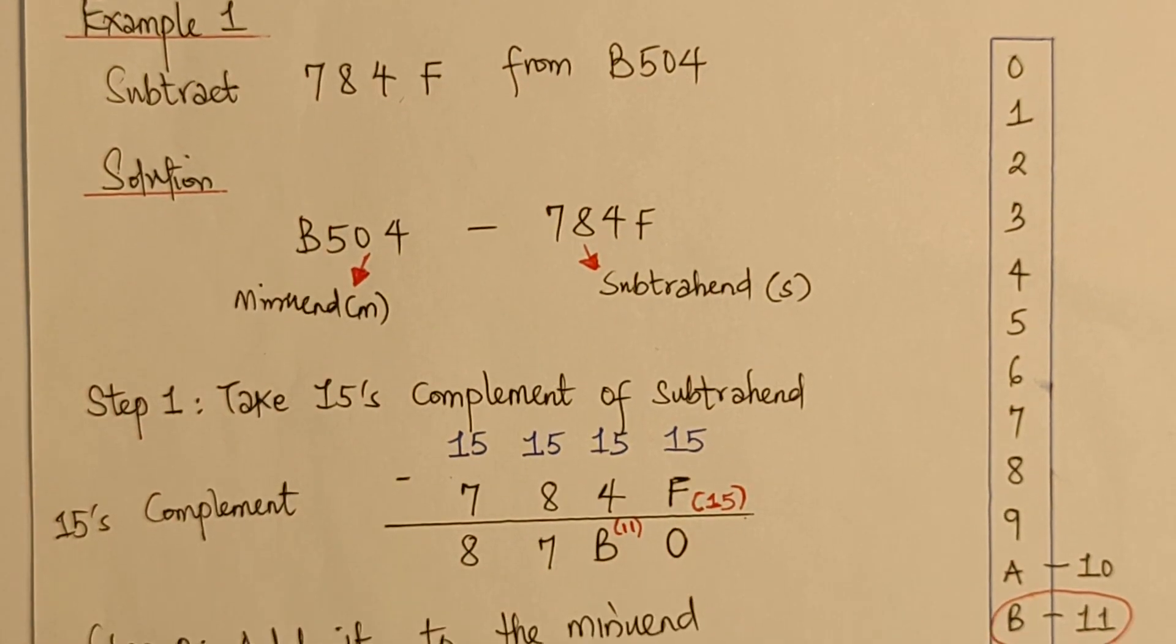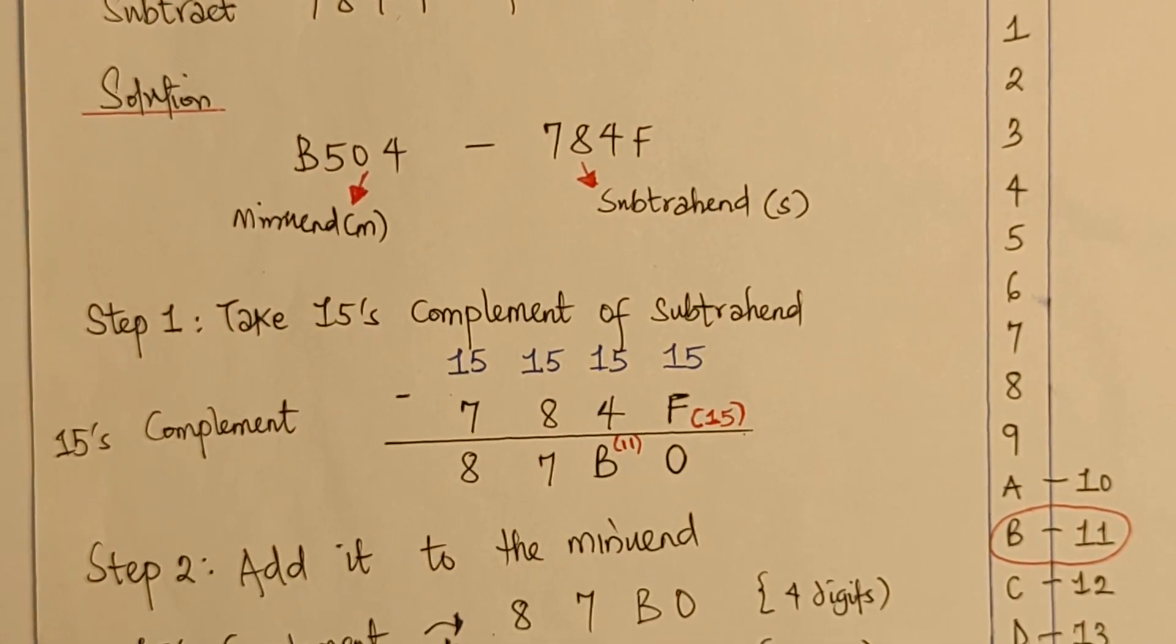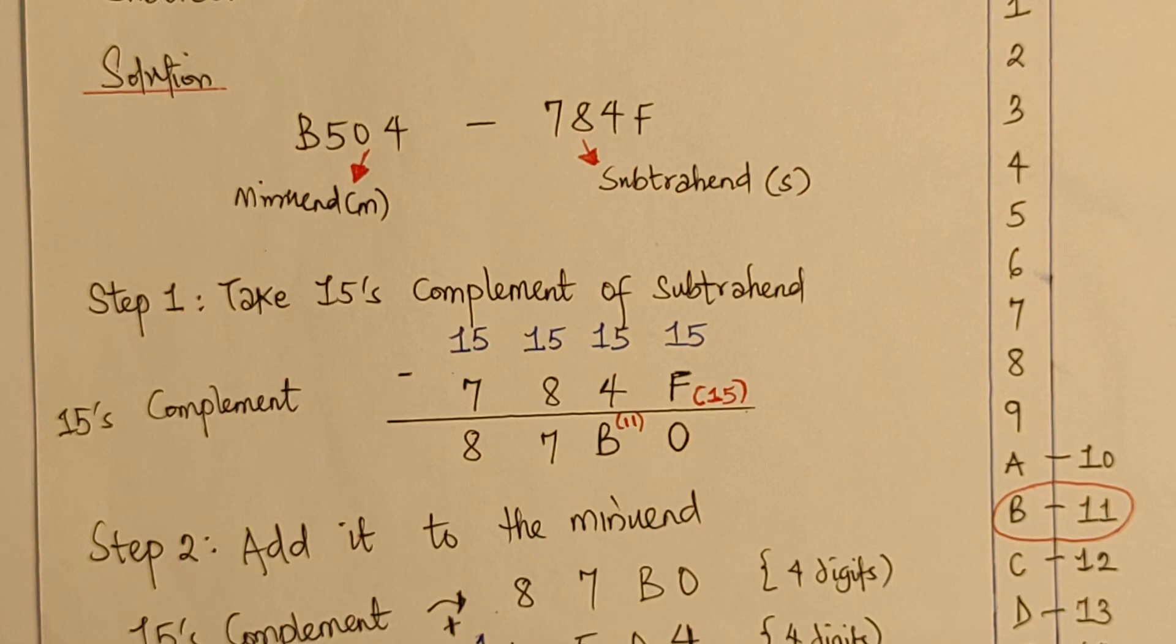Now, we'll move to the next step, which is step 2. In our step 2, we are asked to add whatever we get here, being the 15's complement to the minuend. So, it means we are adding 87B0 with B504. So, while we are going to add that, we are going to have a summation of the value you can see.